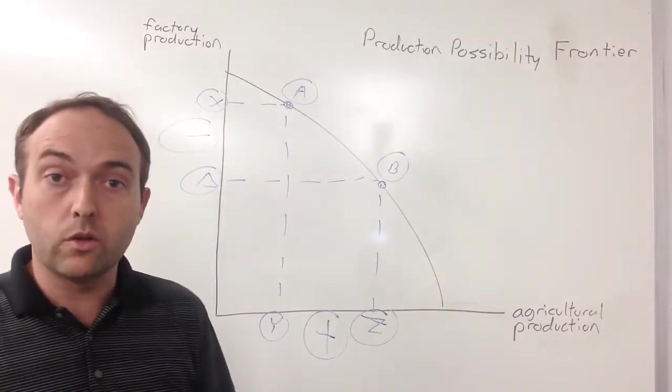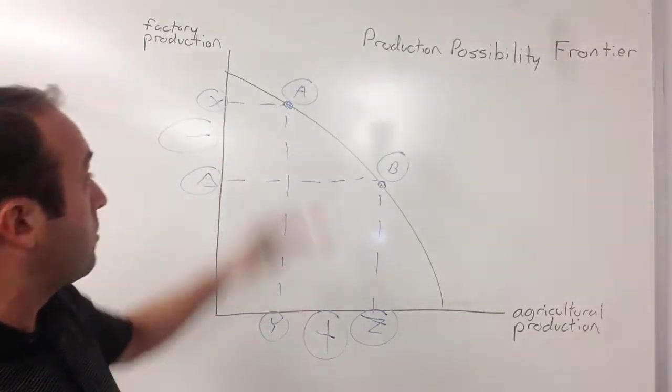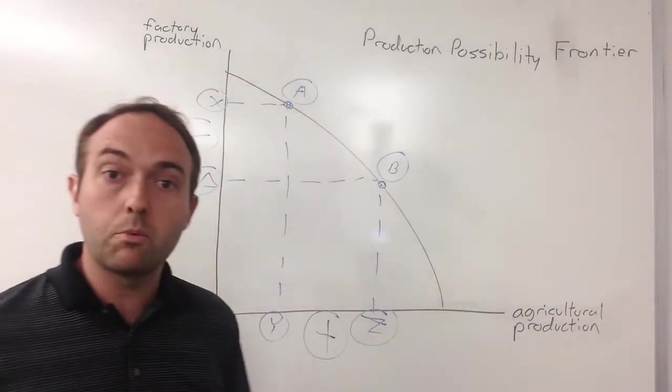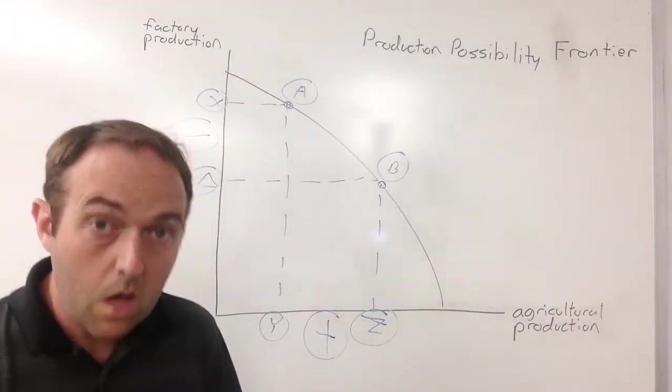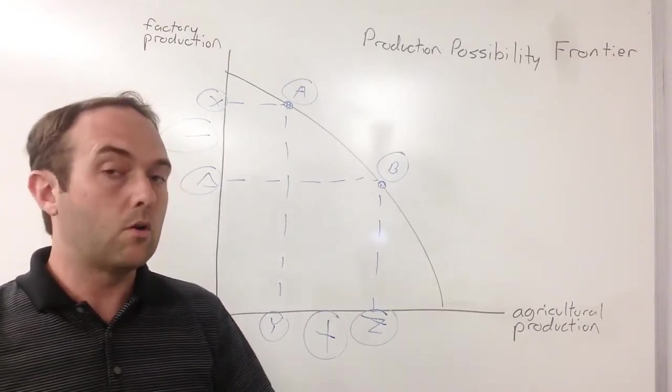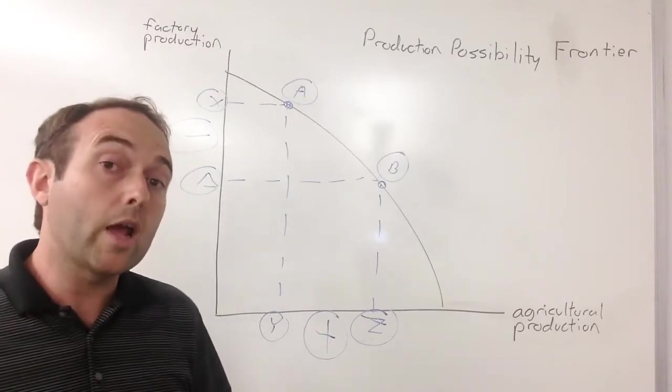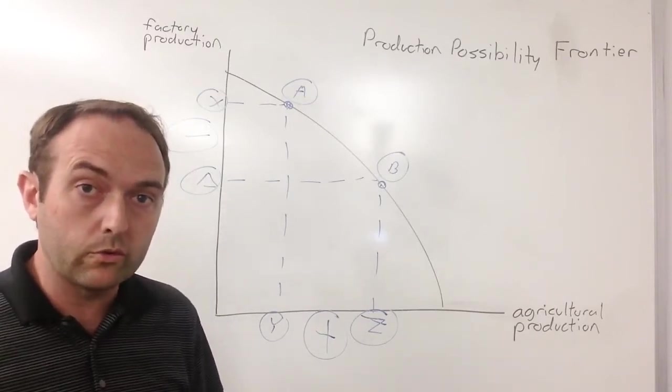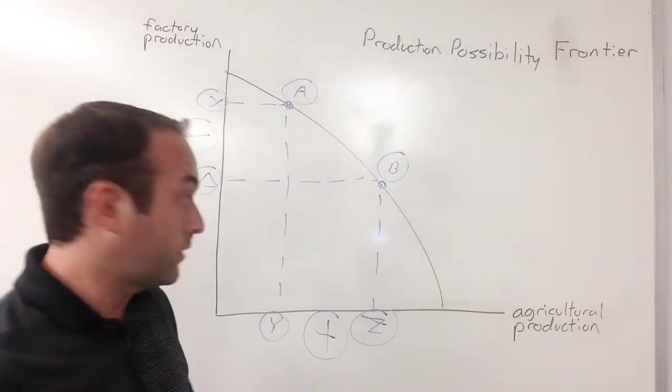Next thing that you can see with your production possibility frontier is the idea of unemployment. Remember, every point on this chart represents how much stuff society can make if it uses all of its resources. But what if it's not using all of its resources? What if, like in the United States, there are millions of people who are unemployed. They want to work, but they're not. If you're not actually using all of your resources, your actual production combination is going to be something inside of the PPF, not on it.